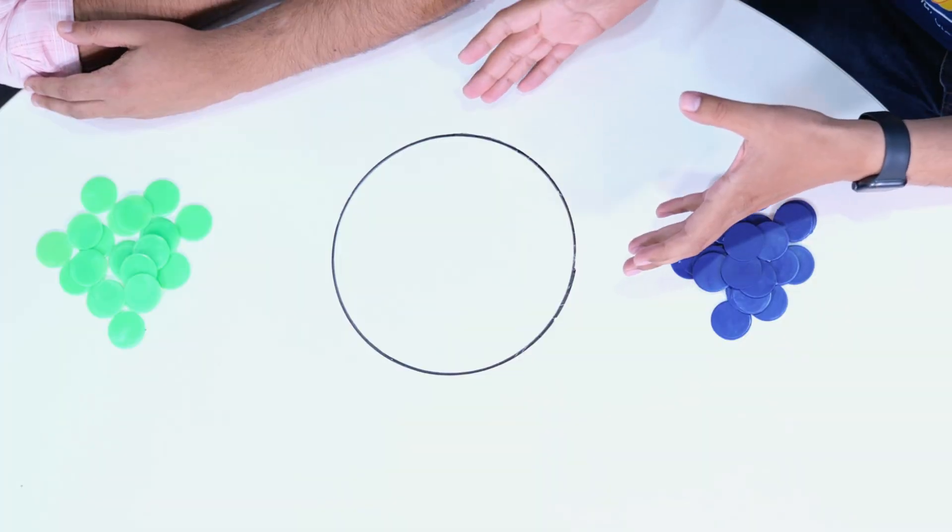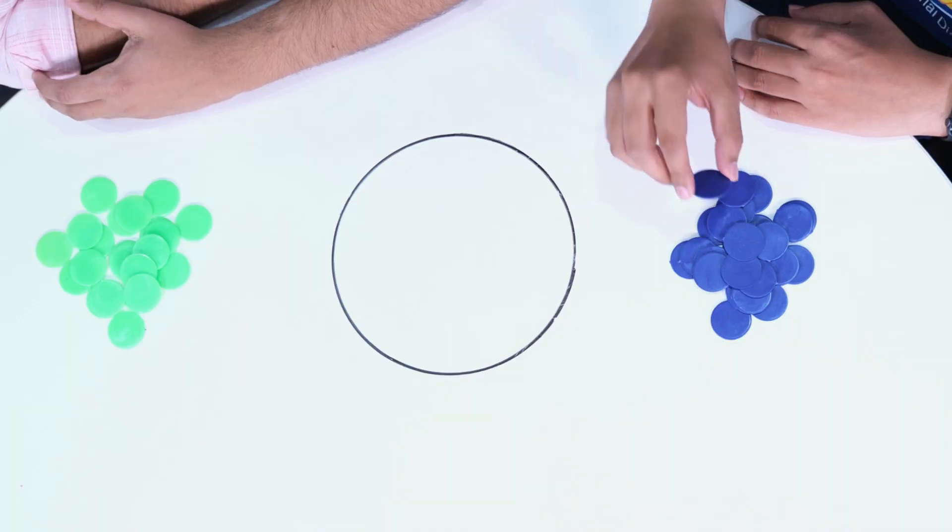I want to talk about this very cool game called coins in a circle. To play this game I have with me Karan, who's a fellow math lover like me and loves to play math games as well. So let me explain the game to you. You see this circle here, this is where we're going to play the game—think of it as the board of our game. I have these blue plastic coins, a bunch of them, and Karan has green plastic coins, a bunch of them.